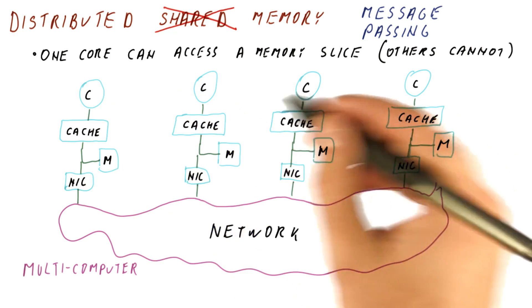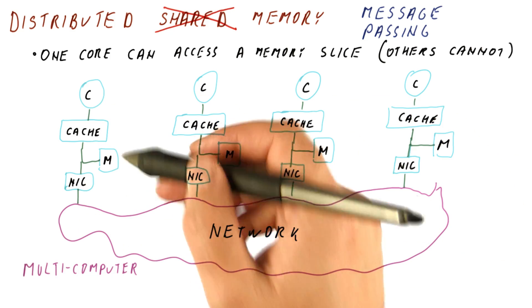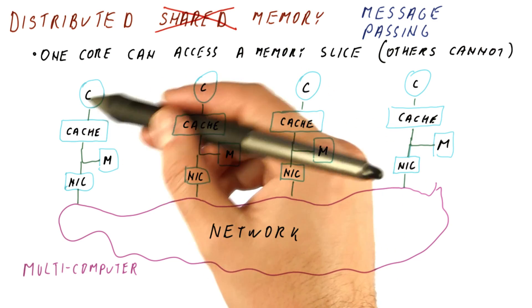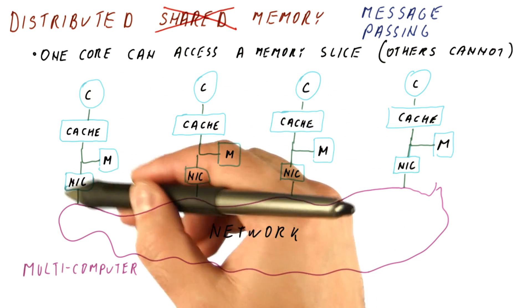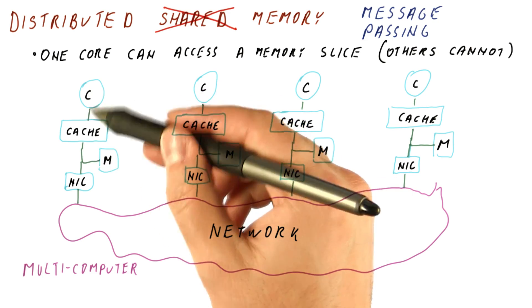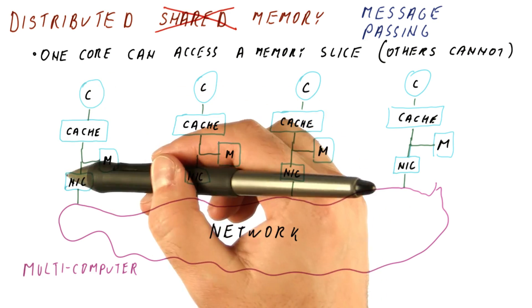This type of system is also called a multi-computer, because really each of these is like a complete computer. It has the processor, the cache, the memory, some I/O, and the processor only directly accesses the local memory. So it looks like a complete uniprocessor system.